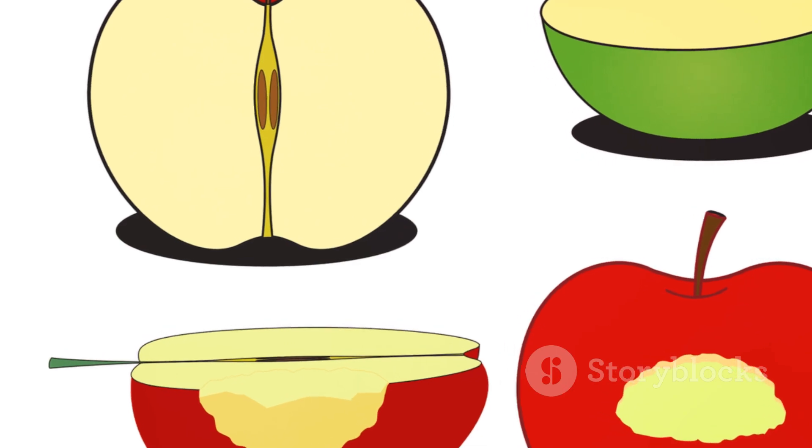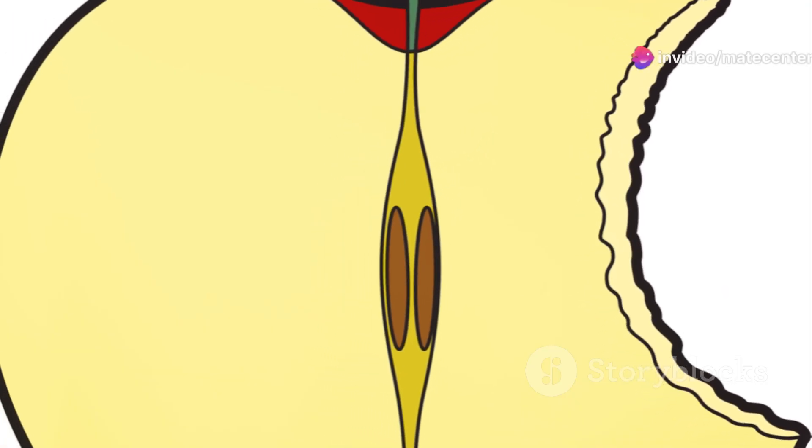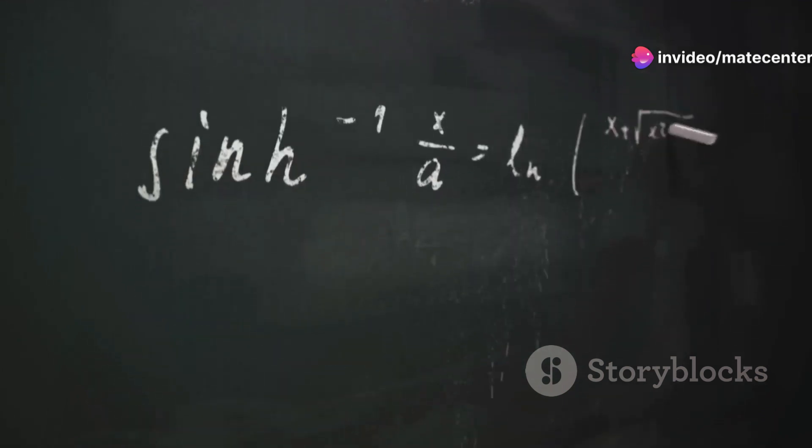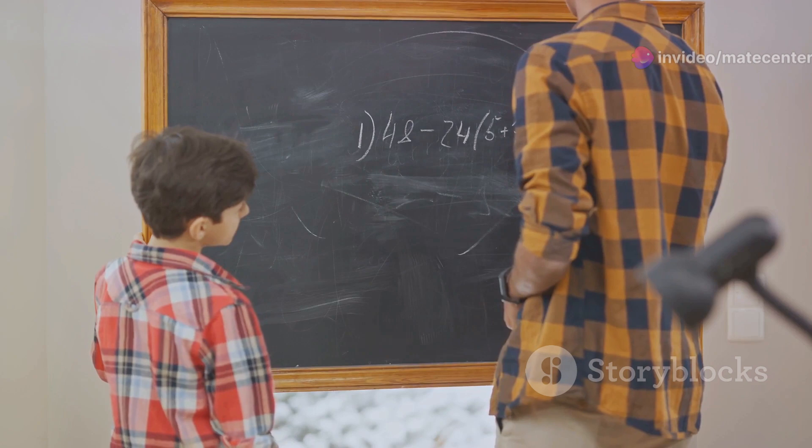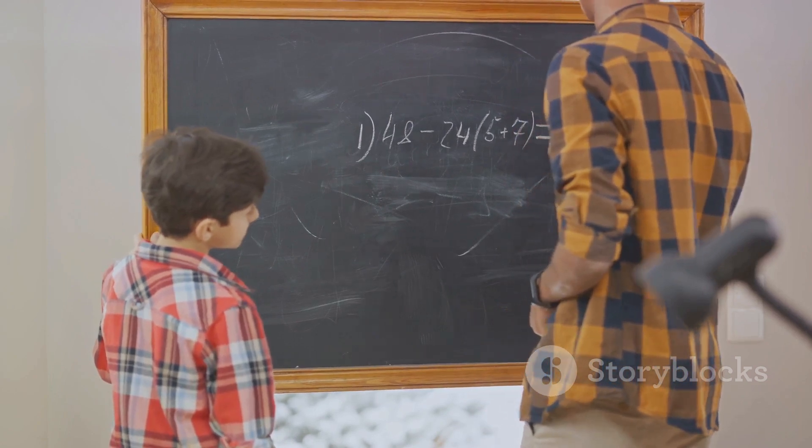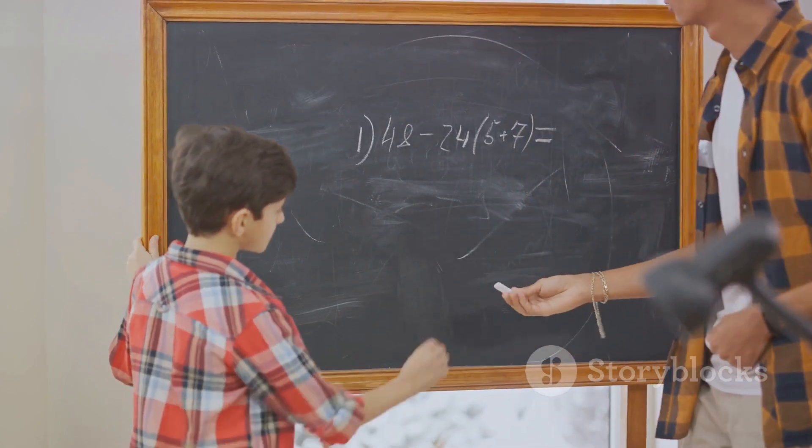But what if we have more than one part, say two parts of the apple? Well, that's where things get interesting. We'd represent two parts as two-fourths, or in symbols, 2/4. Notice how the numerator changes to represent the number of parts we have. That's the beauty of fractions.